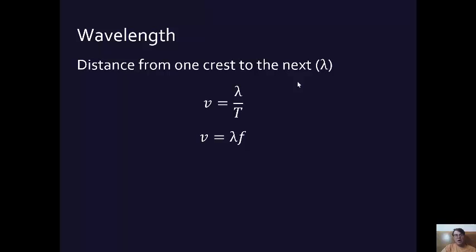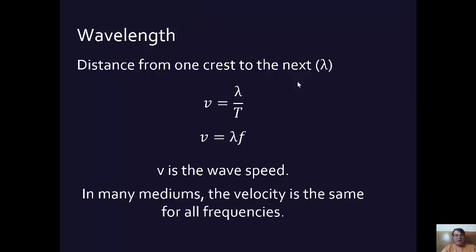Alternatively, since the frequency is 1 over T, the velocity of a wave is going to equal the wavelength times the frequency. This is something we're going to use a lot in the rest of this physics book at various points. So the speed of a wave is going to equal the wavelength times the frequency. And in many mediums, the velocity is the same for all frequencies. So there you have it. We've gotten the second section on the table. That was easy.